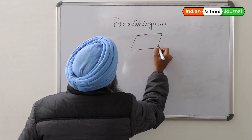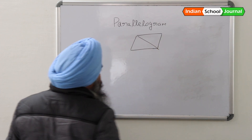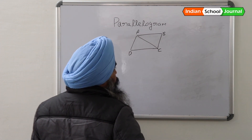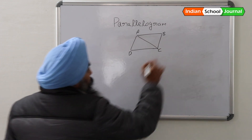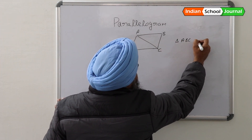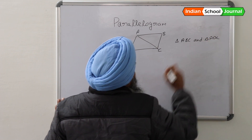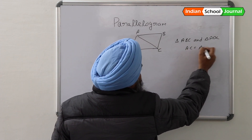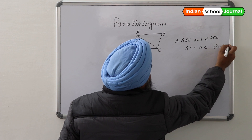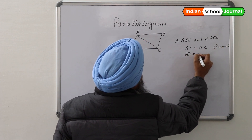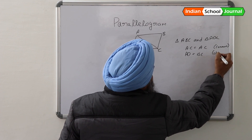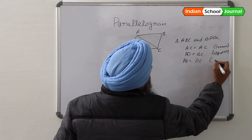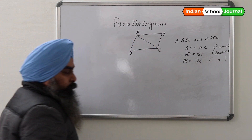Let me draw a parallelogram. This is the diagonal, and the vertices are A, B, C, D. What can you say about triangle ABC and triangle ADC? Triangle ABC and triangle ADC are equal because AC is common to both, AD is equal to BC, and AB is equal to DC — these are opposite sides of the parallelogram which are equal.